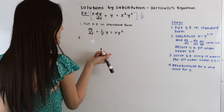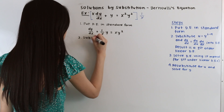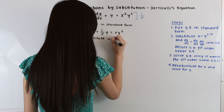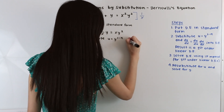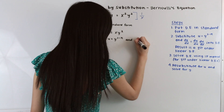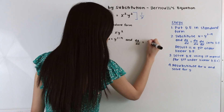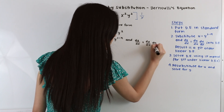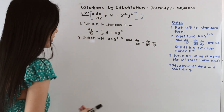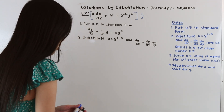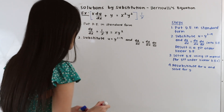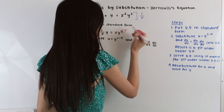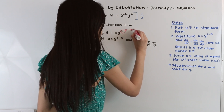In our next step, we substitute u = y^(1−n) and dy/dx = (dy/du)(du/dx) into our differential equation. Let's start by identifying what n is equal to. n is the exponent on our nonlinear term, so n is equal to 2.